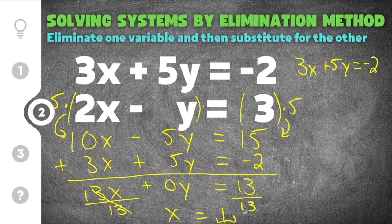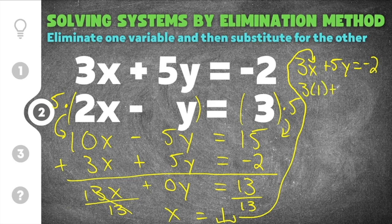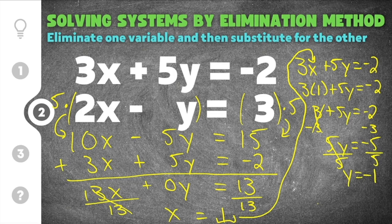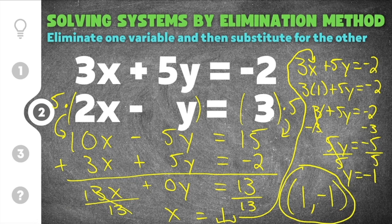I know x equals 1, so substituting in: 3 times 1 plus 5y equals negative 2. 3 times 1 is 3. Subtracting 3 from both sides gives 5y equals negative 2 minus 3, which is negative 5. Dividing both sides by 5, we get y equals negative 1. So our (x, y) coordinate is (1, negative 1) — that is the solution to this system of equations found using the elimination method.